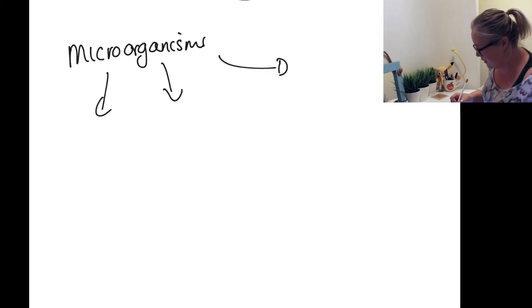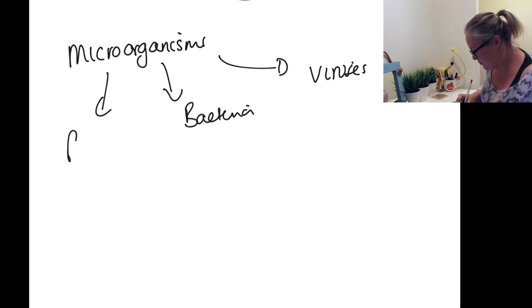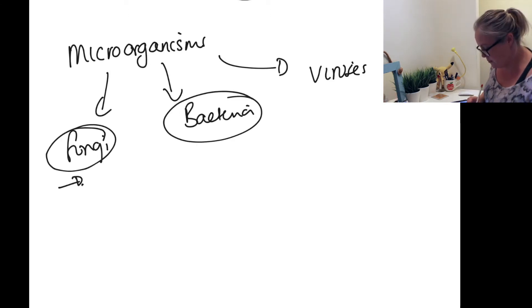So before we go through the decay cycle, what are microorganisms? We could be talking about three different things here: viruses, bacteria, and fungi. We're going to be talking about bacteria and fungi today because both of them can be used to decay items.